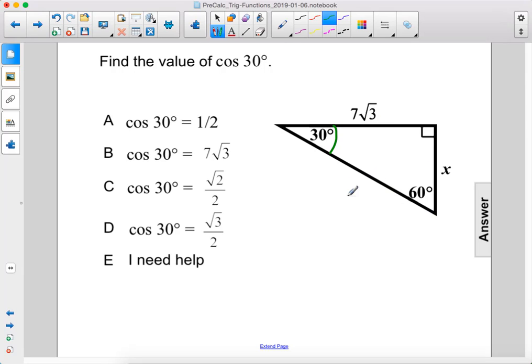Let's figure out what these other sides are. The ratio of the sides is x to 2x to x times the square root of 3. This is pretty easy to figure out in this case because this side is 7 times the square root of 3.